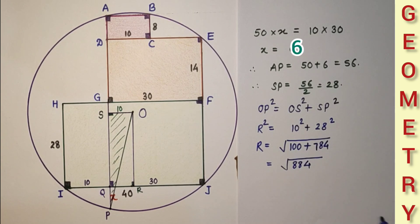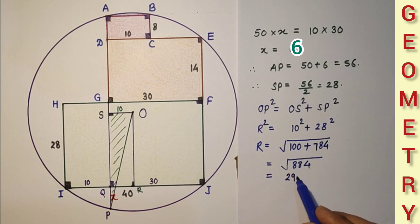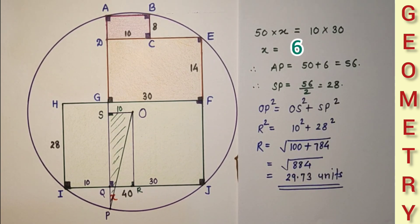So square root of 884 is equal to approximately 29.73 units, and that is the answer. This is the radius of the circle required.